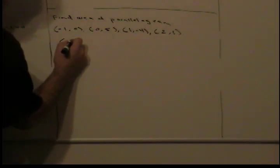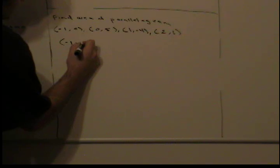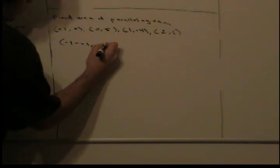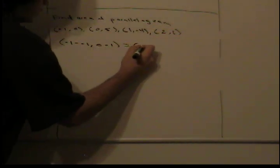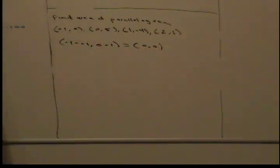So, we have -1 minus -1 and 0 minus 0. This gives us (0, 0), the origin.